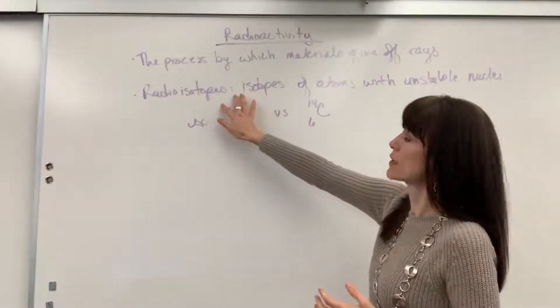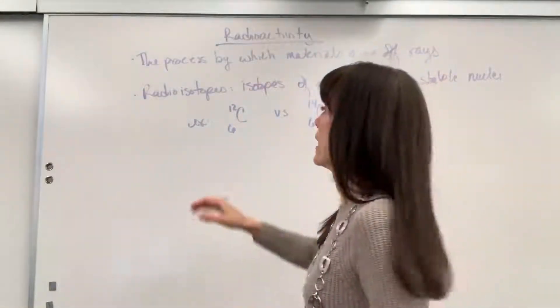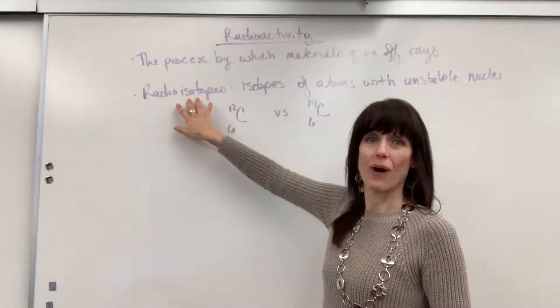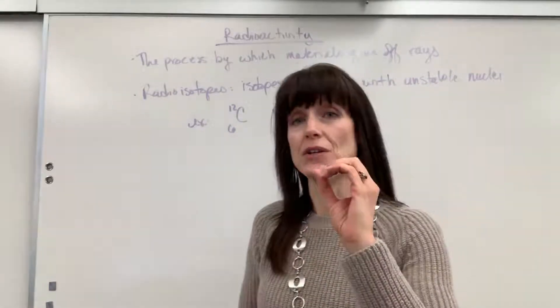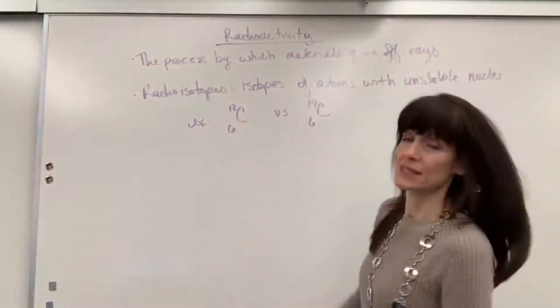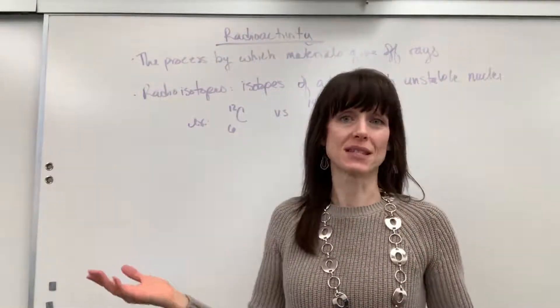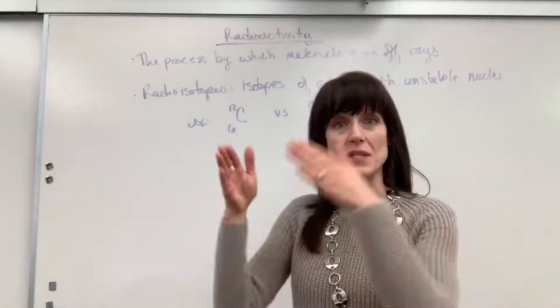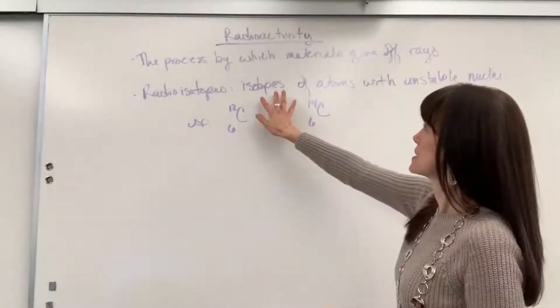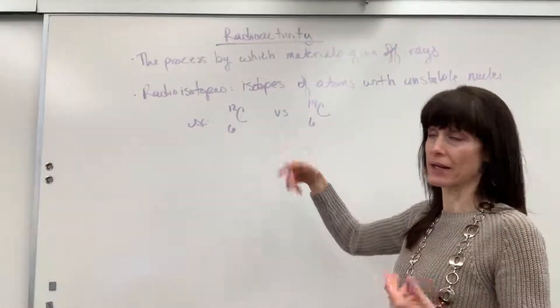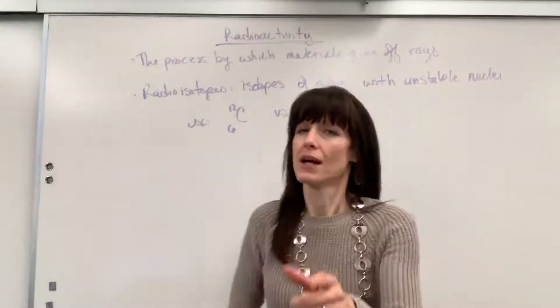And so here, we can take it even a little more specifically and use a term called radioisotopes. It's where we're looking specifically at the different nuclei. So radioactivity is going to be any substance that gives off rays, and then we could be specific and actually name a radioisotope. And this is going to be a specific isotope of atoms that have unstable nuclei.